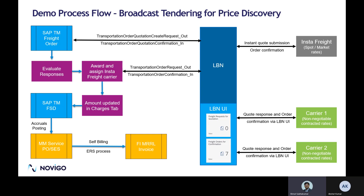As a start, we begin with a SAP TM freight order. We assume that planning is complete and the freight order is ready for tendering and for full truckload. We use a tendering profile and send the request out to all three carriers together — that is what broadcast tendering is all about.